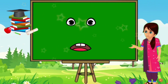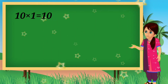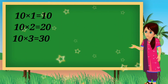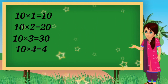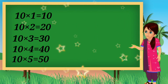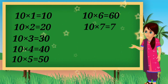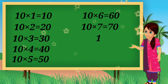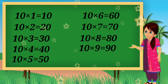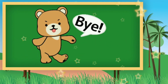चलिए बच्चों एक बार फिर से दो राते हैं। 10, 1, 10. 10, 2, 20. 10, 3, 30. 10, 4, 40. 10, 5, 50. 10, 6, 60. 10, 7, 70. 10, 8, 80. 10, 9, 90. 10, 10, 100.